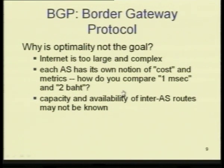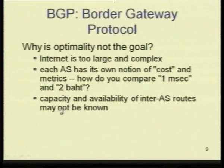How do you compare one millisecond with two minutes or some other unit? Capacity and availability of inter-AS routes may not be known. Considering inter-AS routes together with intra-AS routes to compute a complete route from any source to any destination would become too complex. So BGP handles the problem of scale by providing flexibility in routing — it worries only about how to reach a network, leaving optimality of routing within the network to the autonomous system's own intra-domain routing protocol.